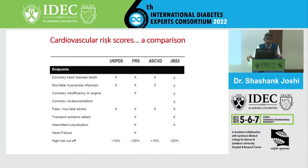The high-risk cutoff also changes across scores: UKPDS was more than 10%, Framingham more than 20%, atherosclerotic cardiovascular risk engine more than 10%, JBS3 more than 20%. Endpoints studied include cardiovascular death, non-fatal MI, angina, revascularization, fatal and non-fatal stroke, TIA, intermittent claudication, and heart failure.